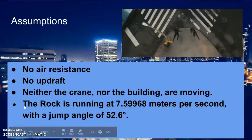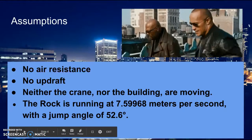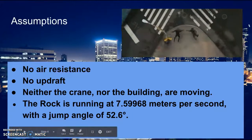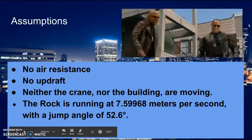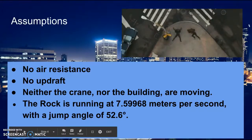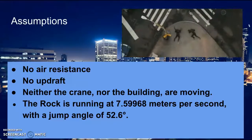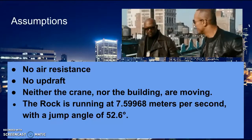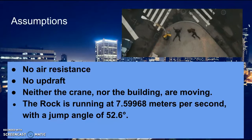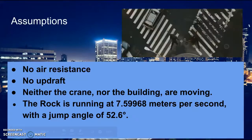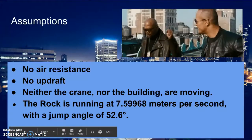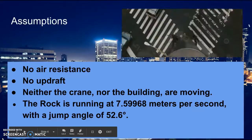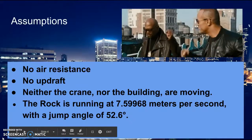The assumptions we're going to make for this clip is that there is no air resistance during his jump. There's also going to be no updraft during it. And neither crane nor the building are going to be moving. They will be stationary. The Rock is running at 7.59968 meters per second at a jump angle of 52.6 degrees. We said he's running this fast because that is the average NFL linebacker peak speed at a 40-yard dash.